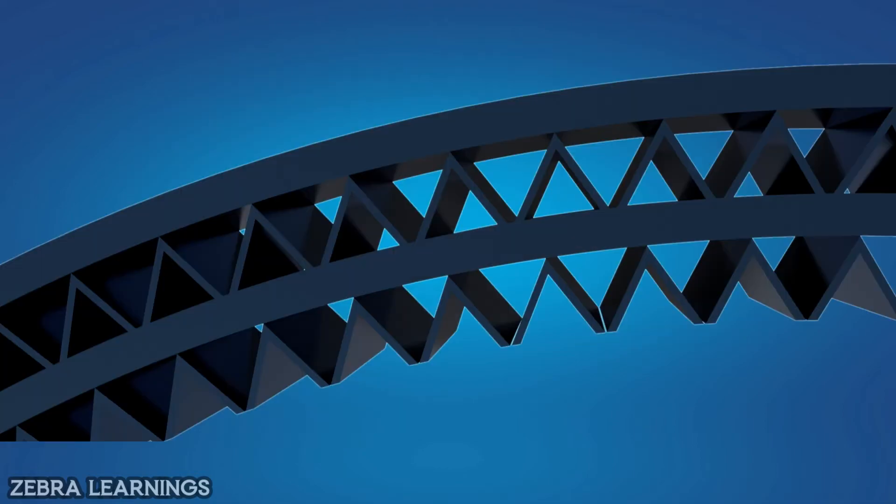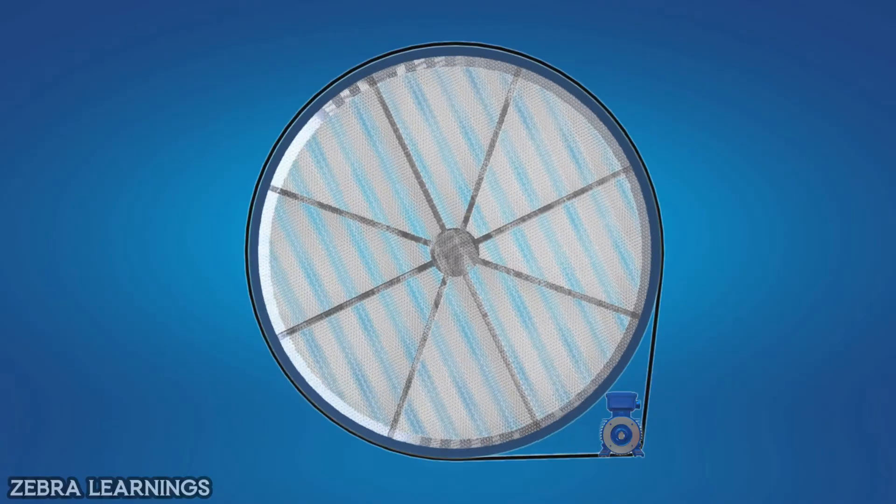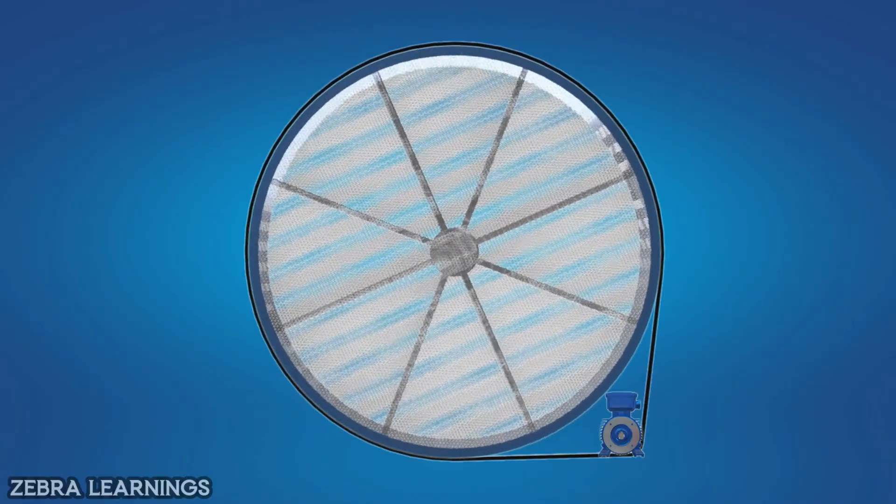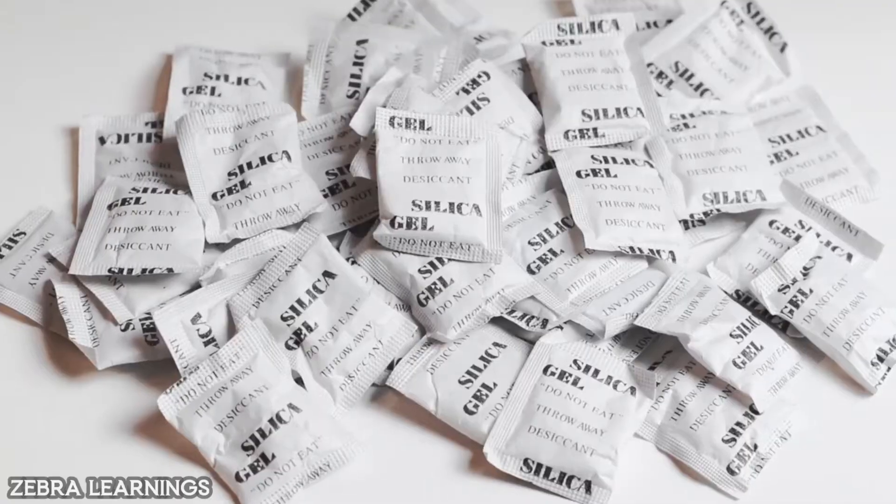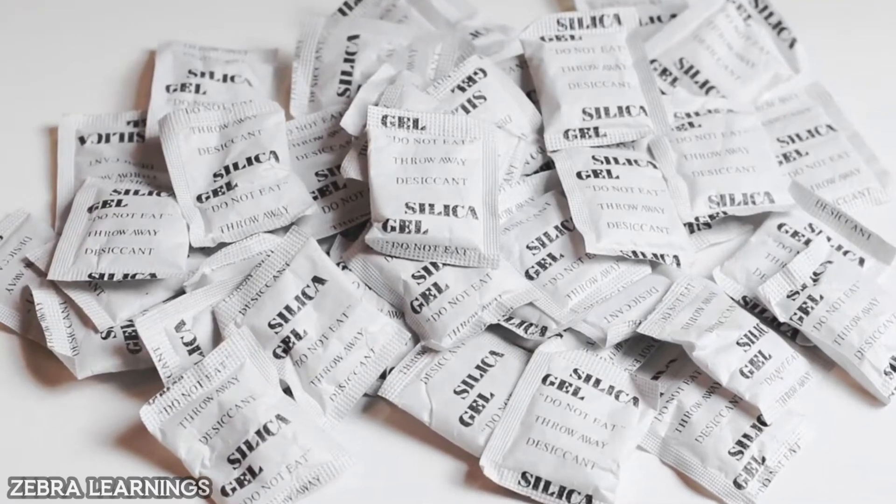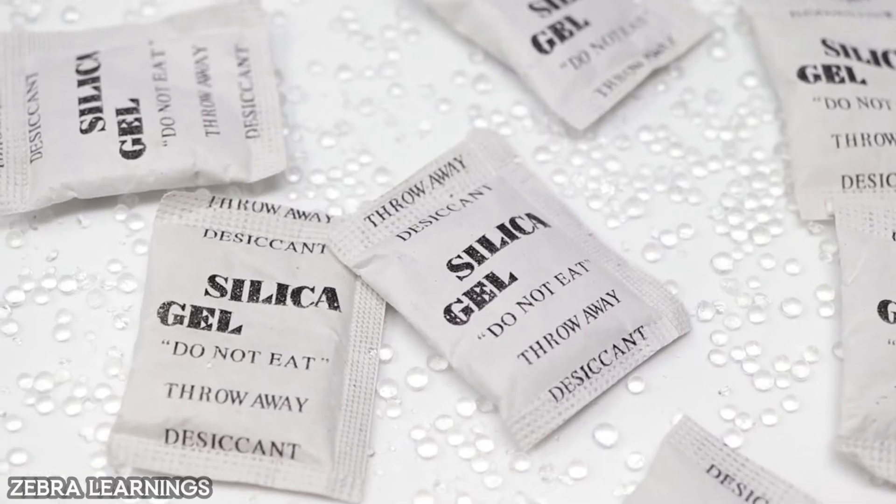This aluminum material is installed in fins type with small gaps so air can flow through it, and it has silica coating. The silica coating absorbs moisture from the air traveling through the wheel. We have seen this silica many times in products we buy.